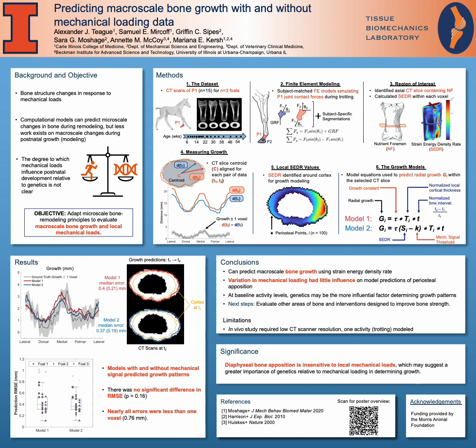For the growth models, we developed two models that incorporated themes from microscale prediction models. These models predicted the outward radial growth g at each periosteal point i. Model one did not include any mechanical loading data and was instead only dependent on the initial cortical thickness and the prediction time interval, whereas model two incorporated the strain energy density rate values as well as a mechanical signal threshold adapted from microscale models.